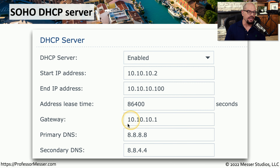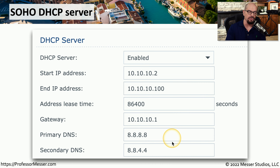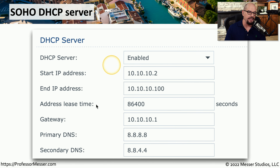The gateway is configured as 10.10.10.1, and we have DNS configurations that will also be assigned to our local devices. So any device on your network that needs an IP address when it starts up will receive an address from this DHCP server with these specific configuration values.